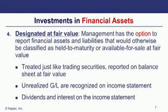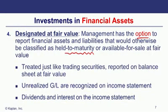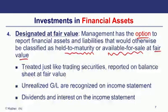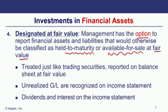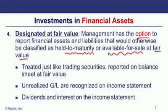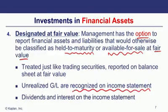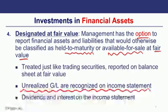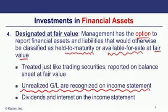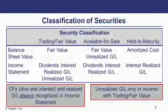A fourth optional classification is 'designated at fair value.' Management has the option to report any financial assets or liabilities that would otherwise be treated as held-to-maturity or available-for-sale at fair value instead. These are treated like trading securities: recorded at fair value on the balance sheet, with unrealized gains and losses going through the income statement.